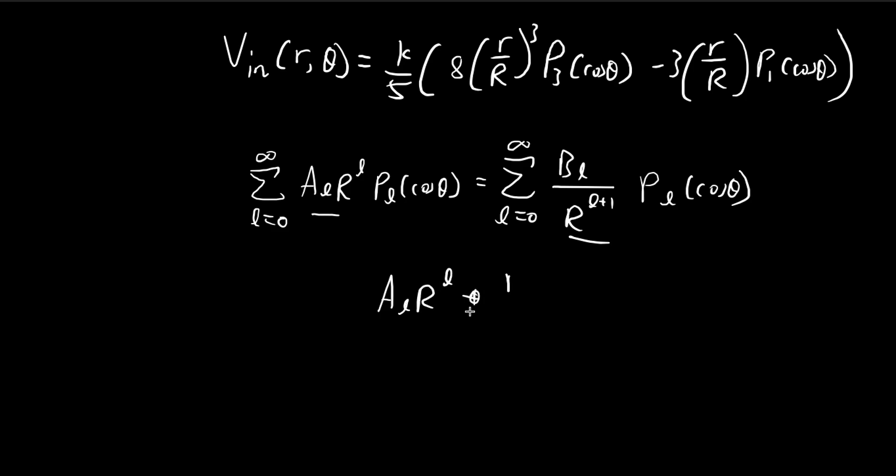Because by comparing coefficients, we know that A_L R^L is equal to B_L divided by R^(L+1). That's why B_L is equal to R^(2L+1) times A_L.